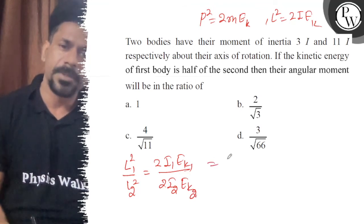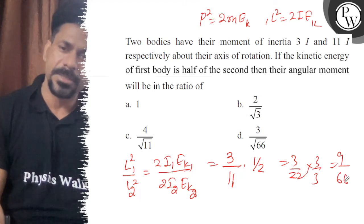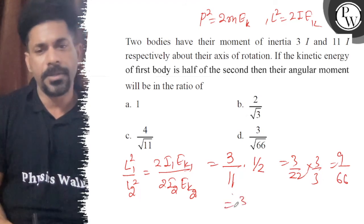So I1 is 3 and I2 is 11, one by two, so that is 3 by 22. Multiply by 3, so 9 by 66, and take the root, so 3 by root 66.